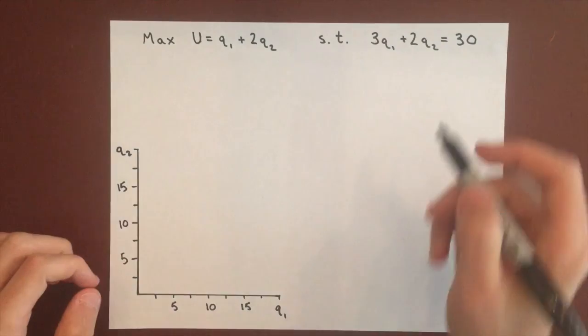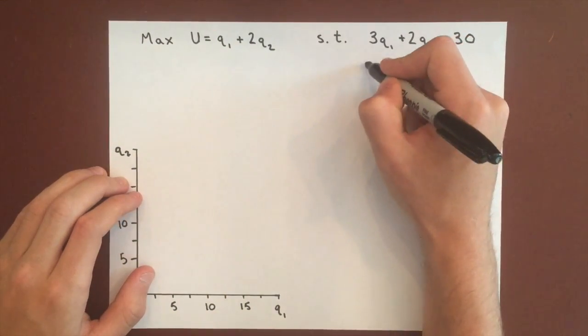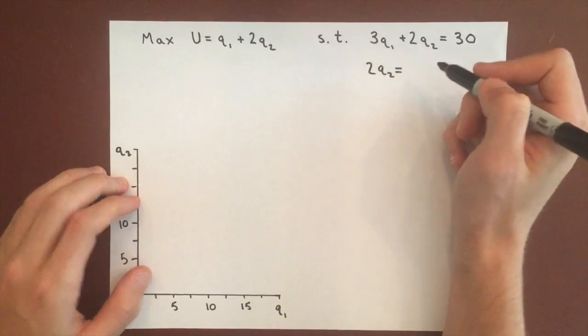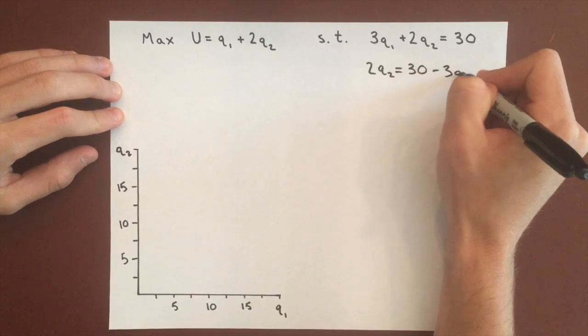We'll solve for Q2 just to make this easier to graph, and we're going to graph the budget constraint first. So 2Q2 = 30 - 3Q1.